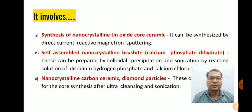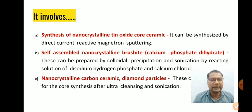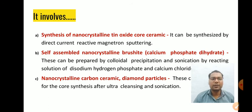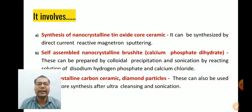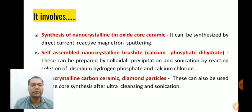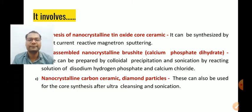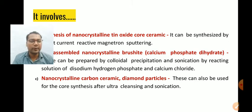It involves synthesis of a nanocrystalline tin oxide core ceramic, which can be synthesized by direct current reactive magnetron sputtering. The second core option is self-assembled nanocrystalline brushite, also known as calcium phosphate dihydrate, which can be prepared by colloidal precipitation and sonication by reacting solutions of disodium hydrogen phosphate and calcium chloride. Nanocrystalline carbon ceramic diamond particles can also be used for core synthesis after ultra-cleansing and sonication.